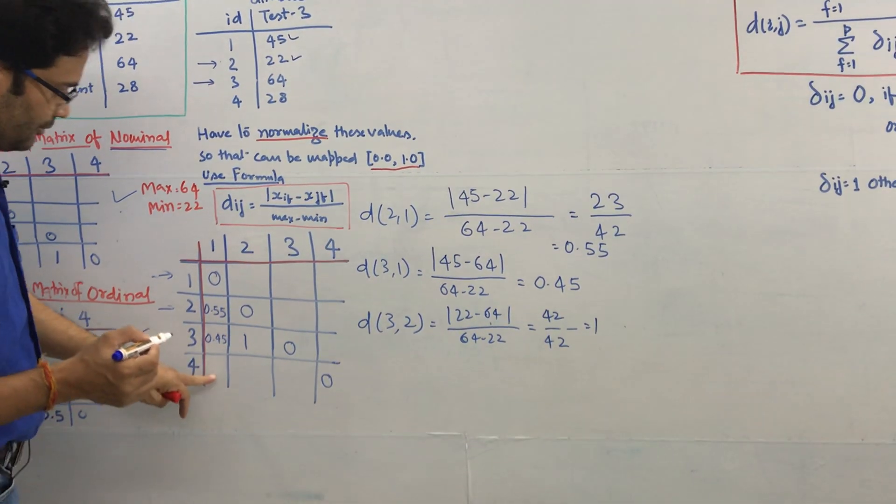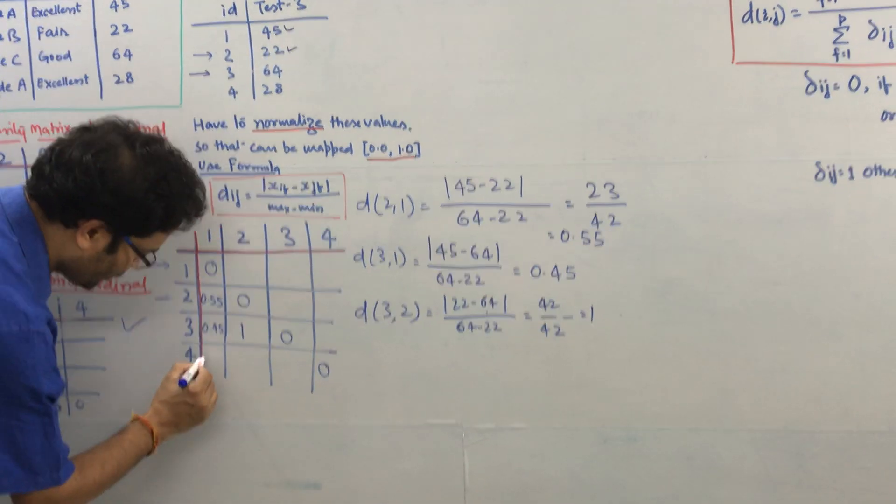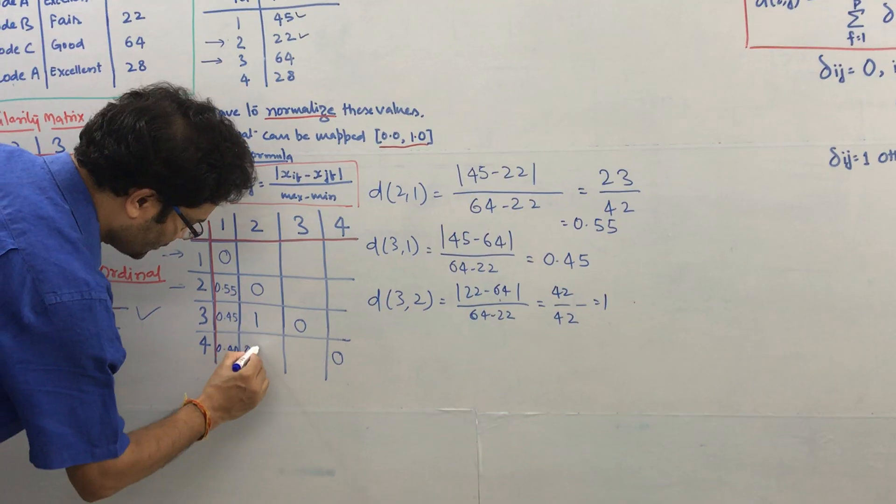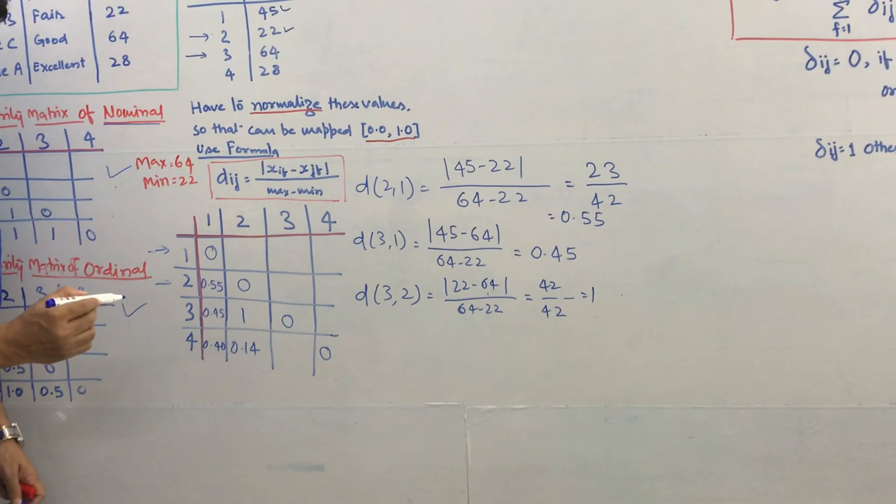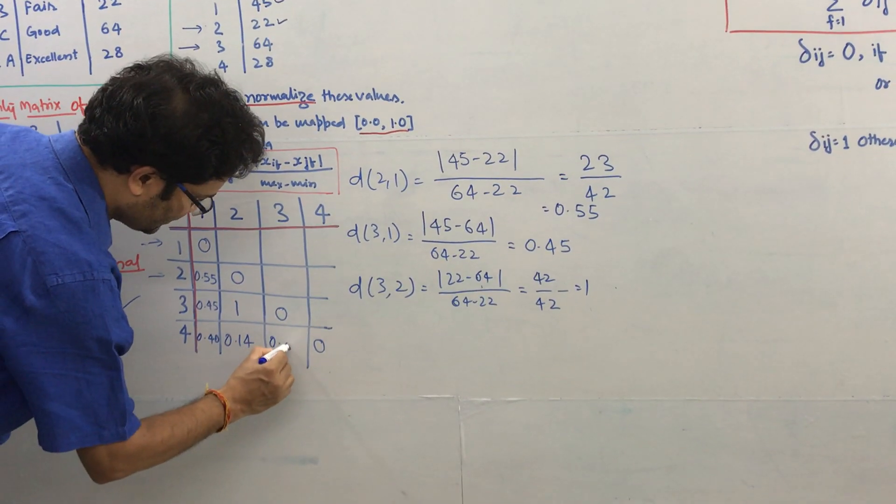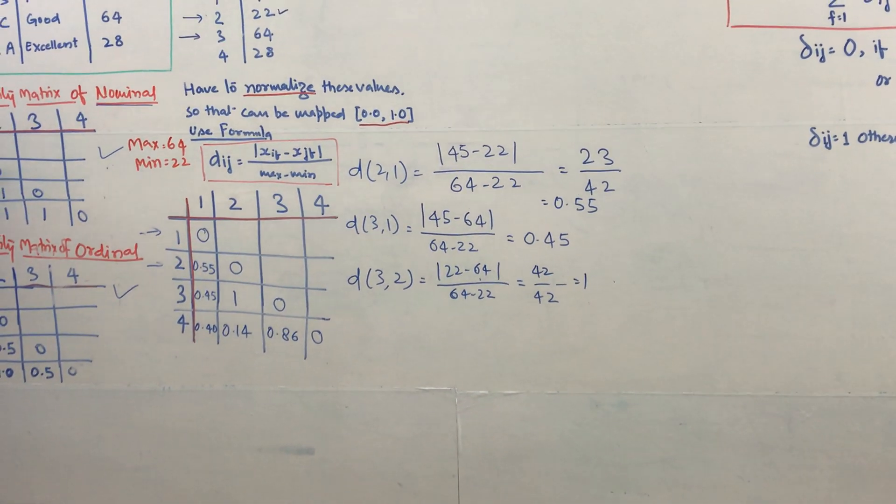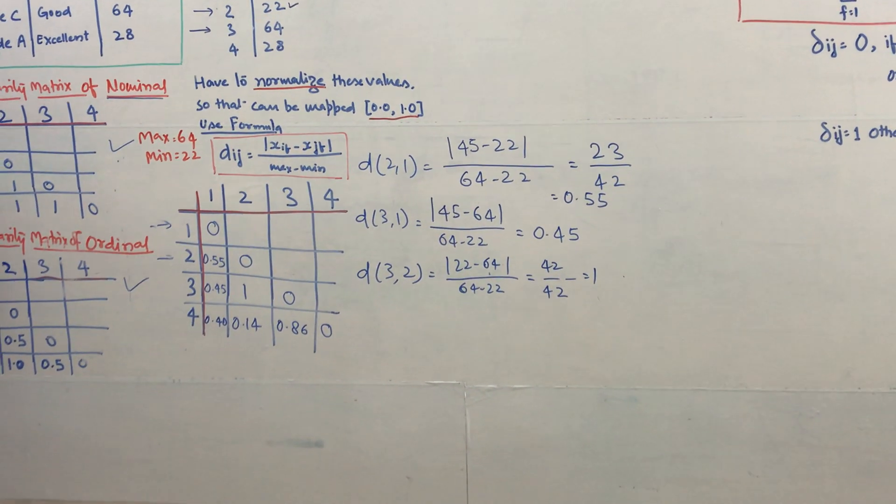The same way if you calculate, this will become 0.40 and this will become 0.14 and this will become 0.86. Now we have all the individual dissimilarity matrices.